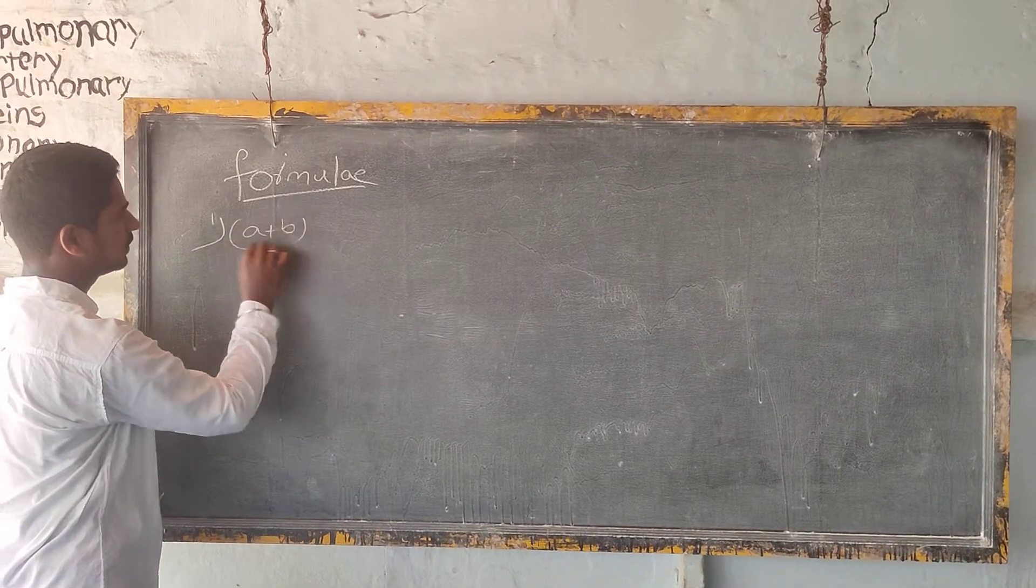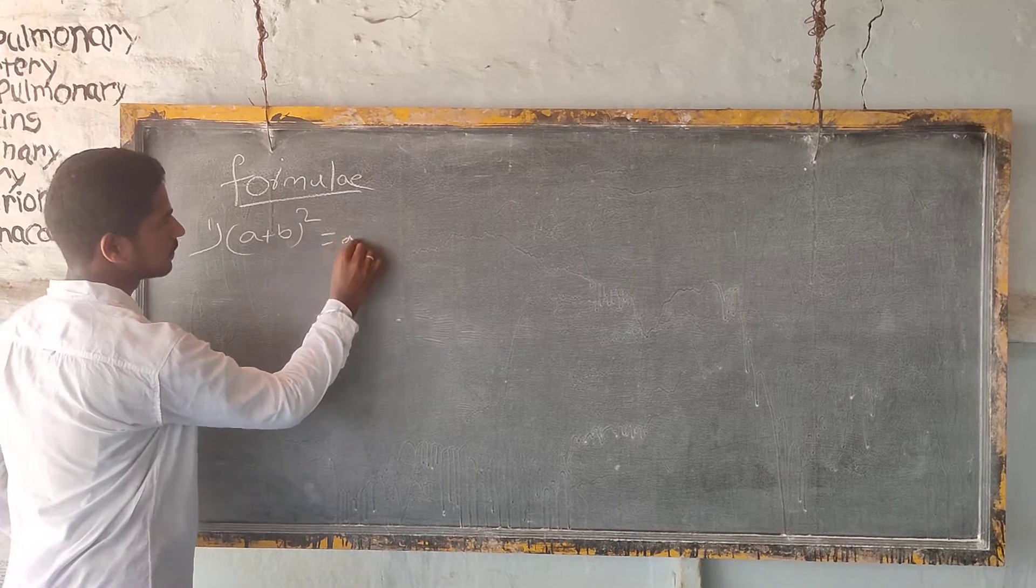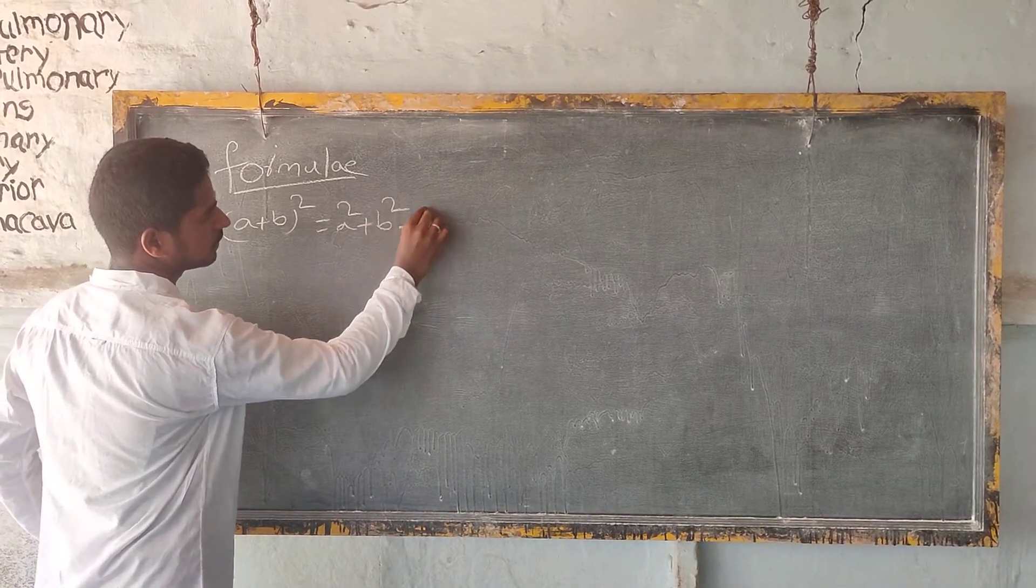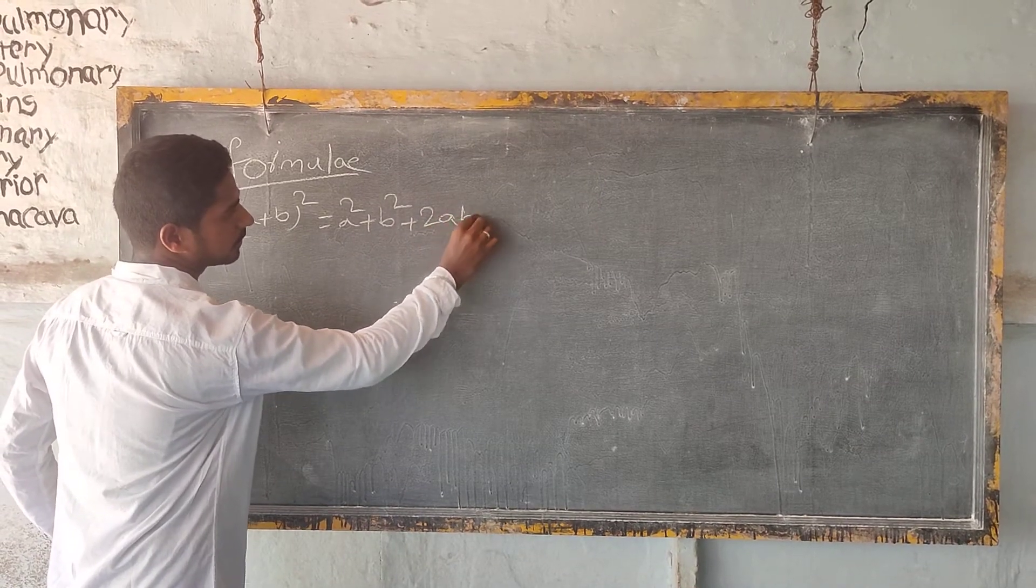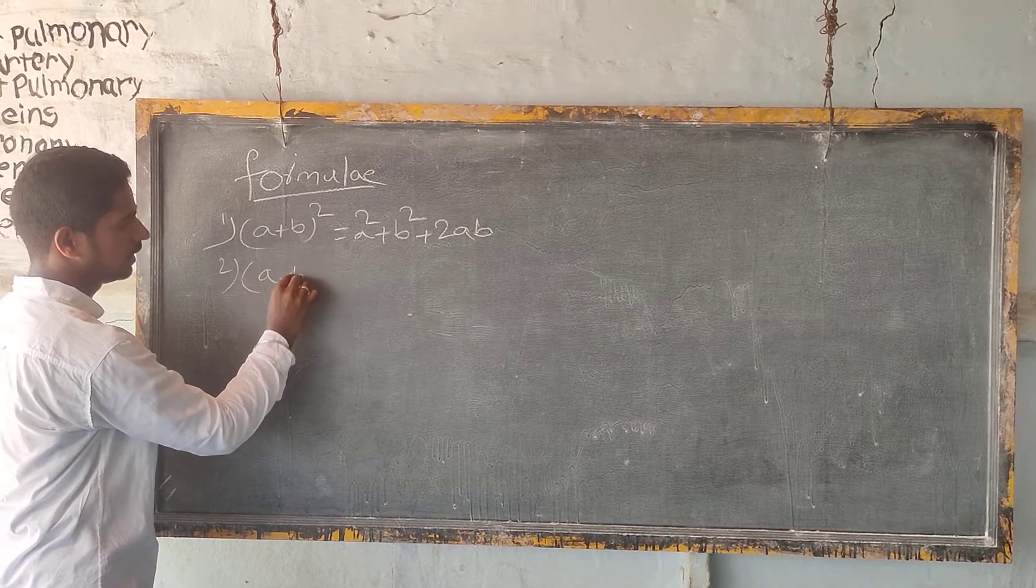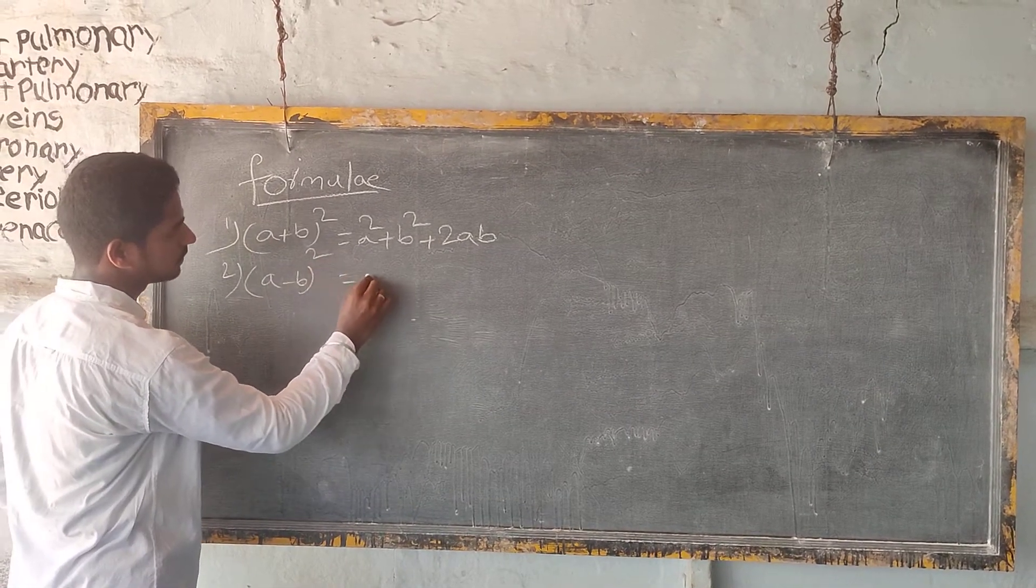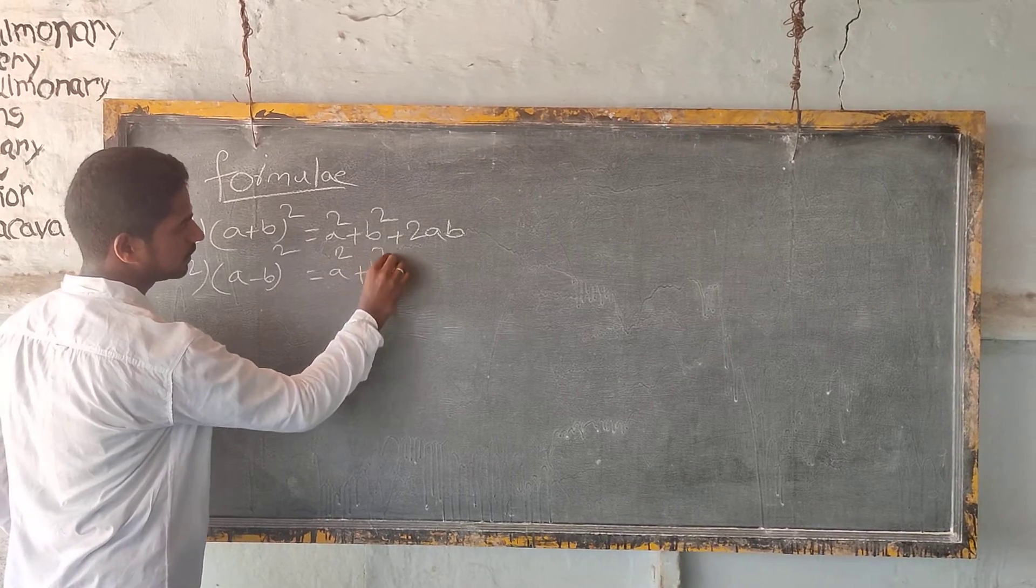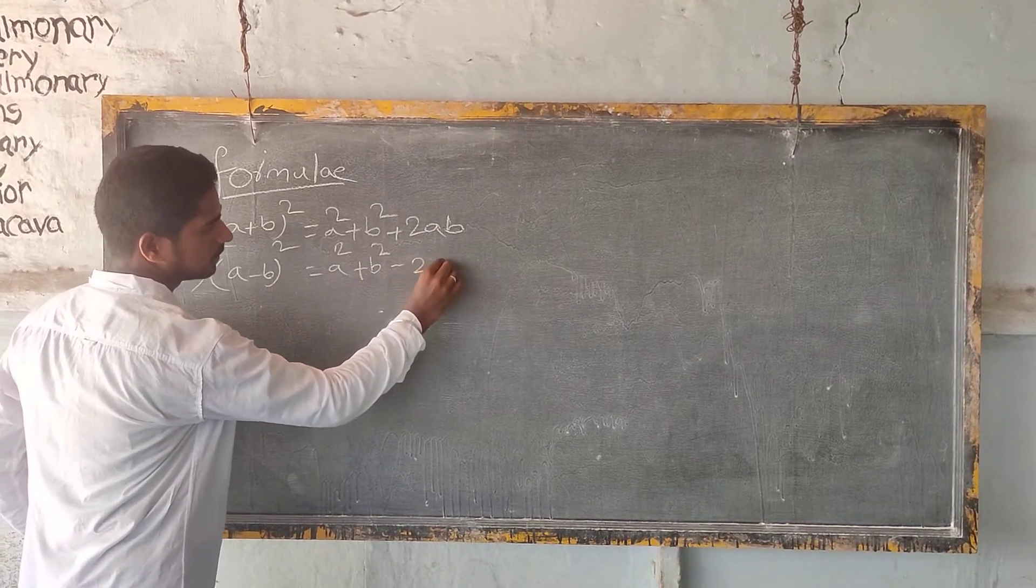A plus B whole square is equal to A squared plus B squared plus 2AB. A minus B whole square is equal to A squared plus B squared minus 2AB.